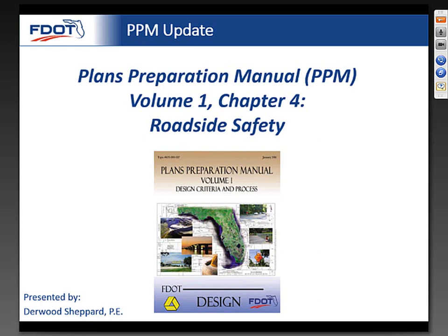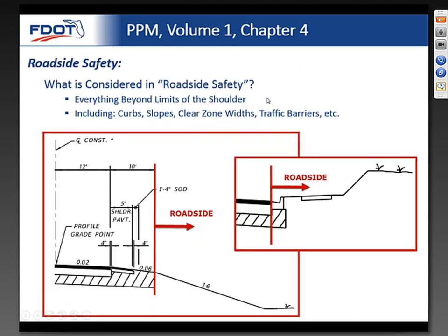I'm going to talk about the Chapter 4 changes to Volume 1 of the PPM—the roadside safety chapter. We made a number of modifications to this chapter. Just to start out, in terms of how we define the roadside: on a flush shoulder roadway, we're talking about everything outside of the shoulder. Shoulder widths and cross slopes are still covered in Chapter 2 of the PPM, but everything outside of that—including curbs, slopes, clear zone widths, traffic barriers, etc.—will be covered in Chapter 4.